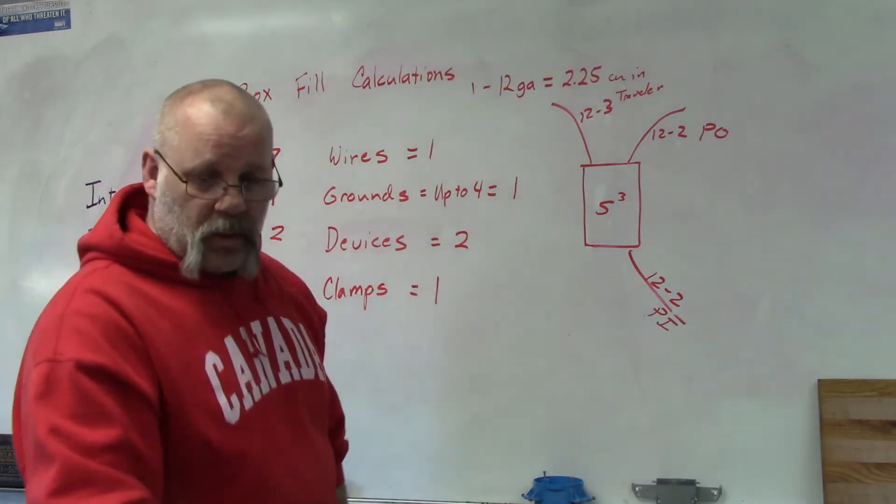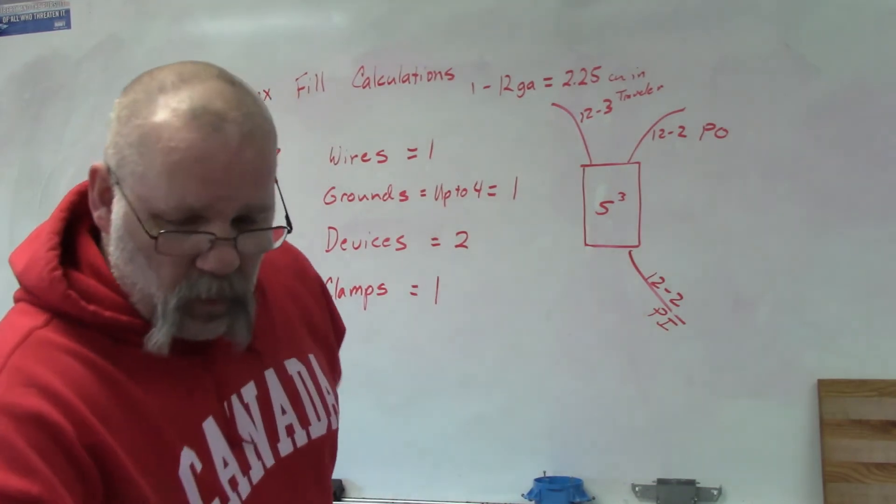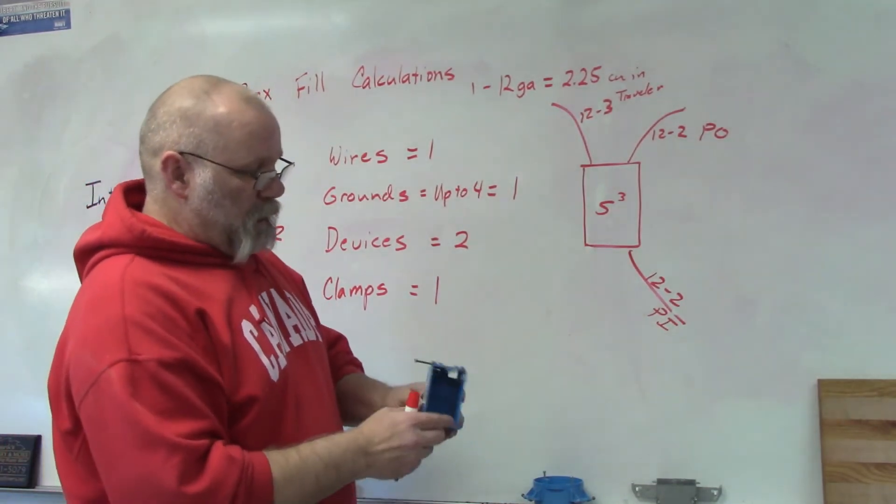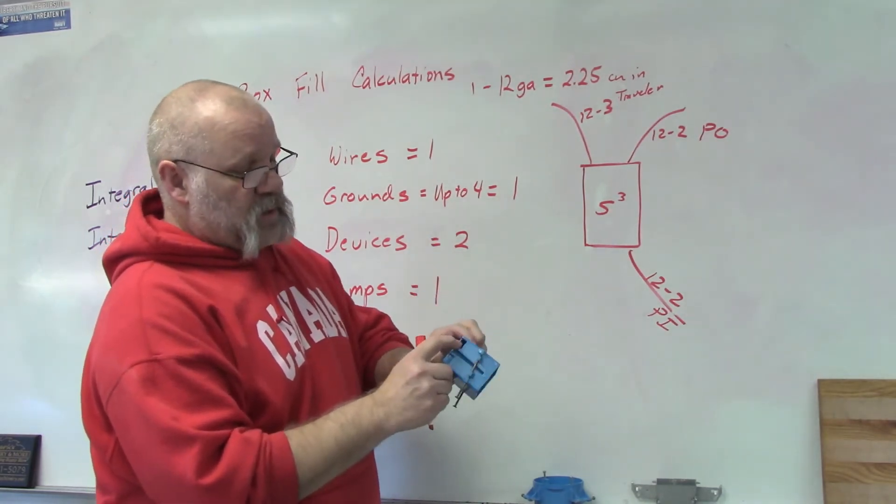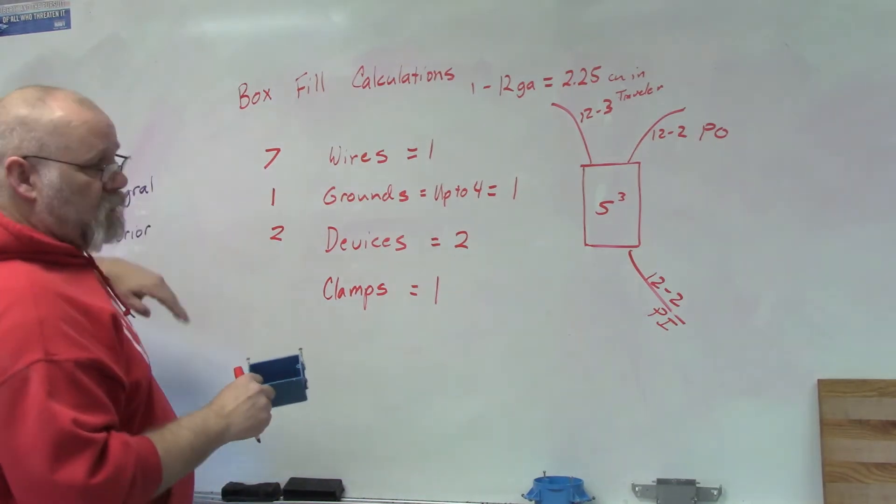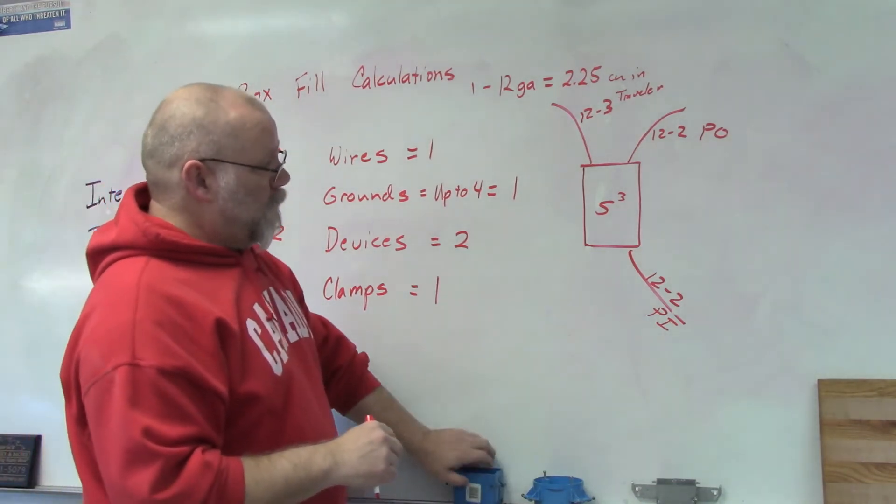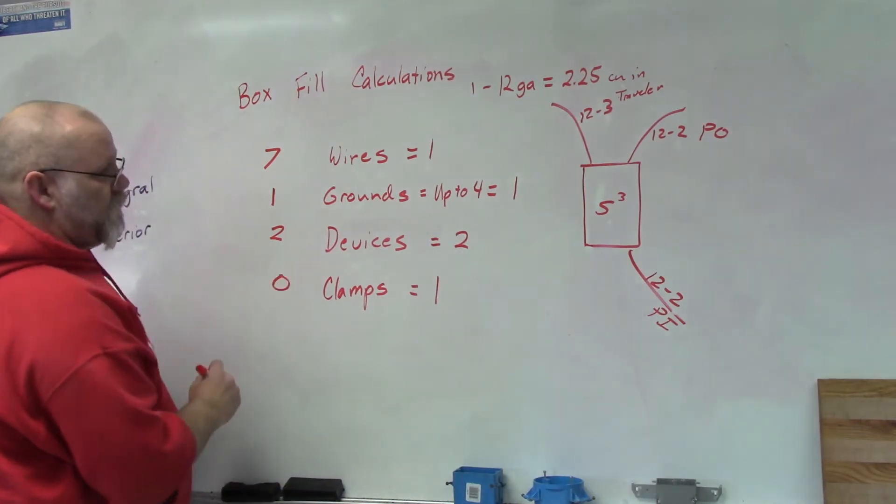So a single gang box does not have any clamps on it. All they have is these knockouts. So they don't count for integral or interior type boxes. So in this case we have zero.